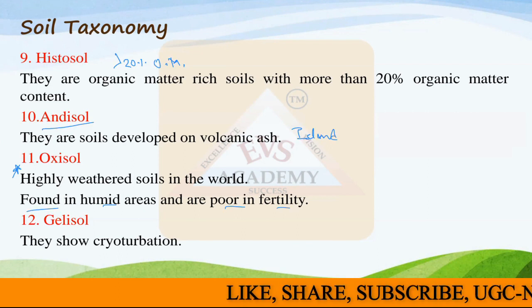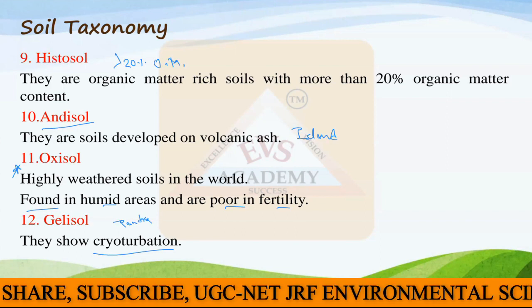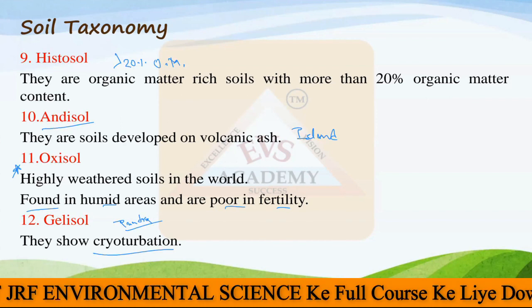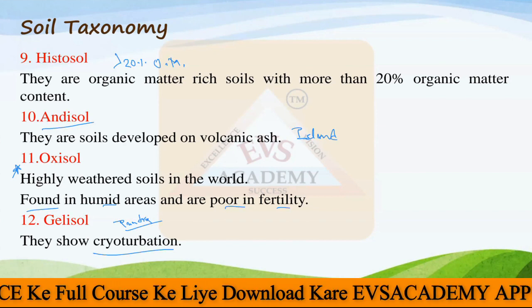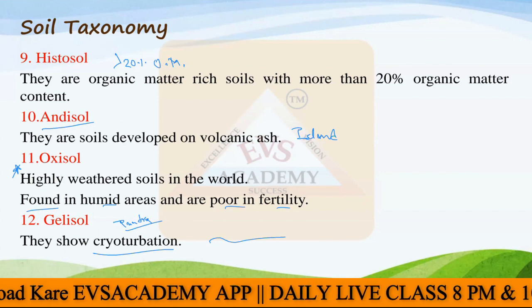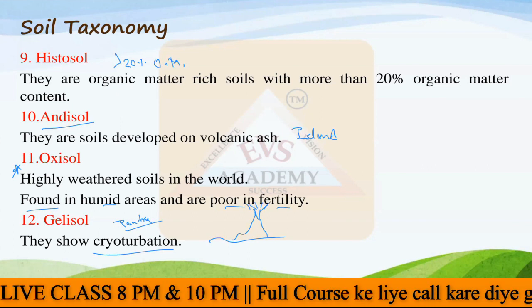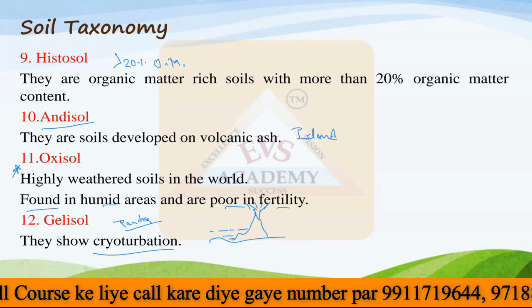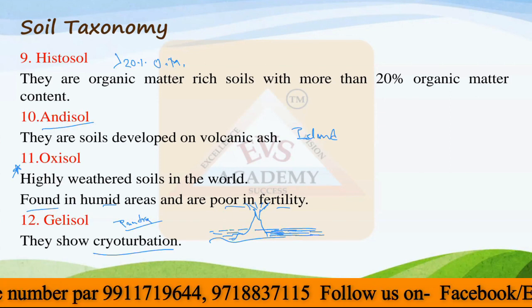Then we have Gelisols. These are the tundra soils. The majority of the time there would be formation of an ice layer above the soil - that is Gelisols. The process here is cryoturbation. What happens in the soil layer during winter time? During winter, ice comes and ice formation takes place - everything is covered with ice, including water present inside the soil layer.